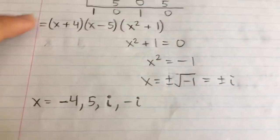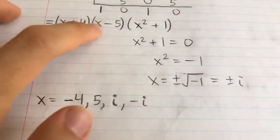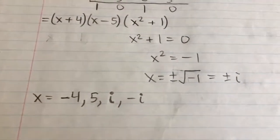And so for our final answer, it's x equals negative 4, 5, i, and negative i.